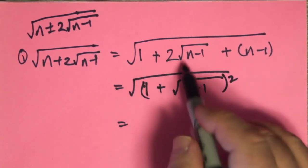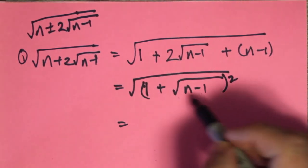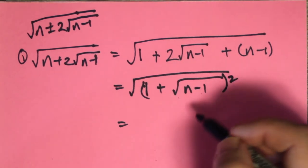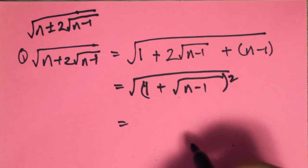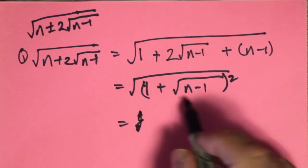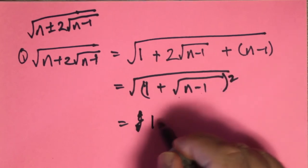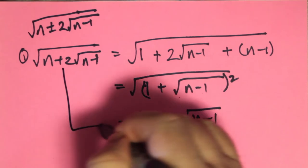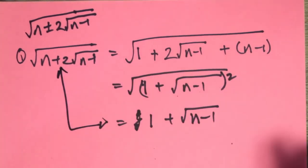This whole thing underneath the square root is itself a perfect square. We're taking this and we're squaring it to get this and so we're just factoring it back. And now we just have the square root of a square is just 1 plus root n minus 1. So this is simplified in the general case.